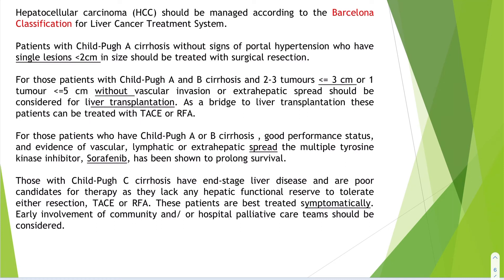Patients with Child-Pugh A or B cirrhosis and good performance status but evidence of vascular, lymphatic, or extrahepatic spread — the multiple tyrosine kinase inhibitor sorafenib has been shown to prolong survival in this group.